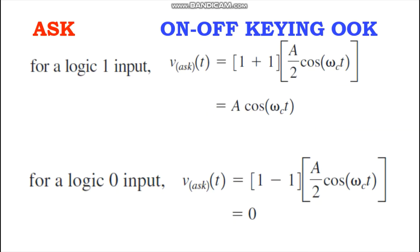Mathematically, in the case of digital amplitude modulation: for a logic high (logic 1), V_ASK(t) = A·cos(ωc·t); and for logic 0, V_ASK(t) = 0. Thus the modulated wave is either A·cos(ωc·t) or 0 — meaning the carrier is either on or off, which is why ASK is sometimes referred to as on-off keying (OOK).